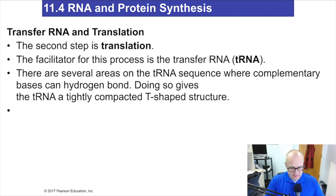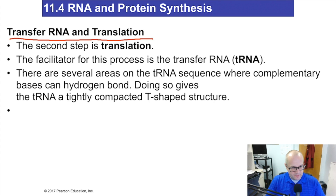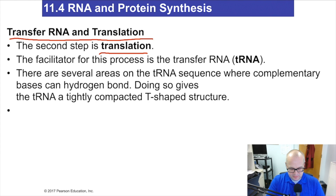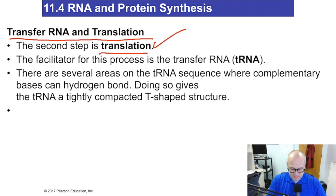Now, transfer RNA and translation. To recap: transcription took the DNA and made a complementary RNA strand called messenger RNA. The messenger RNA left the nucleus, found a ribosome, interacted with the small subunit, and now the large subunit is over top of it. Now we're going to move on to what's called translation — we're going to translate the RNA code to build a primary sequence of a protein. This is facilitated by transfer RNA, also known as tRNA.